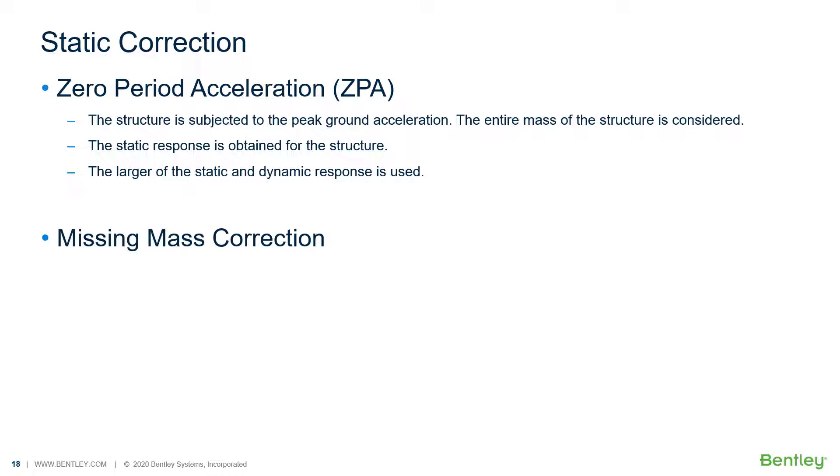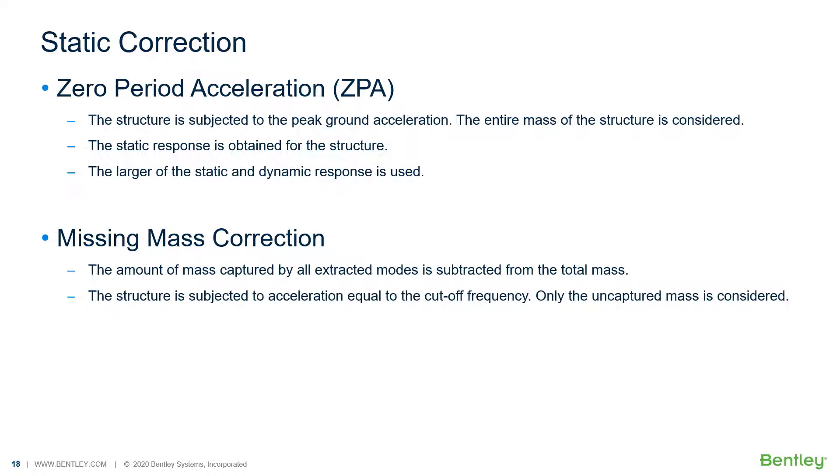The second option is missing mass correction. First, the amount of mass captured by all of the extracted modes is subtracted from the total mass. The structure is subjected to acceleration equal to the cutoff frequency and only the uncaptured mass is considered. The static response is obtained for the structure and the static response is combined with the dynamic response using the user-specified combination method.